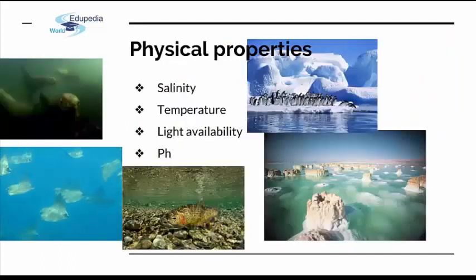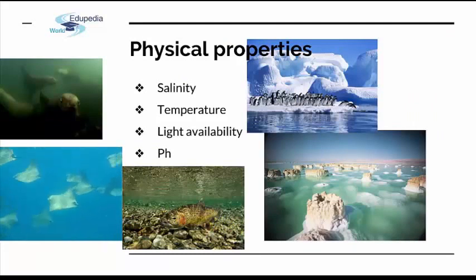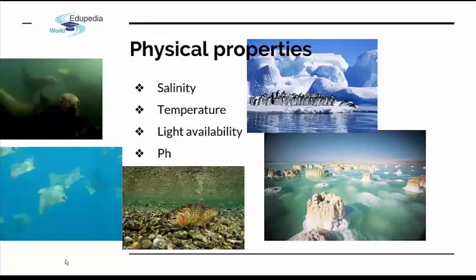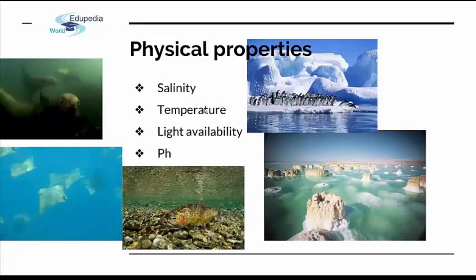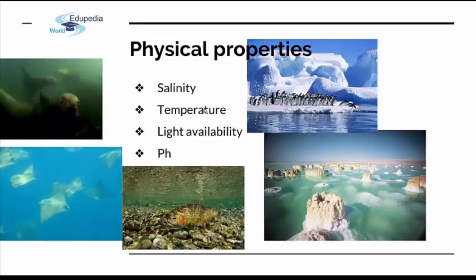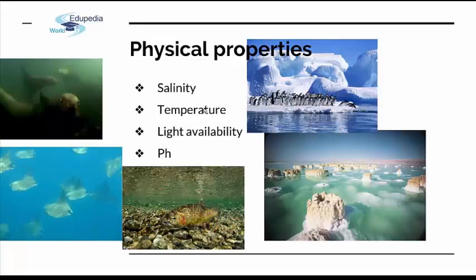So next to salinity, which we mentioned in the beginning as the most determining factor for species assemblage, one of the other physical properties would be temperature, light availability, and pH. Temperature drops with depth — the more water mass, the harder it is to heat up by sunlight. Different species develop different strategies to cope with and adapt to that change. Not all species can live at the same depth, so they have certain positions determined by these physical properties.